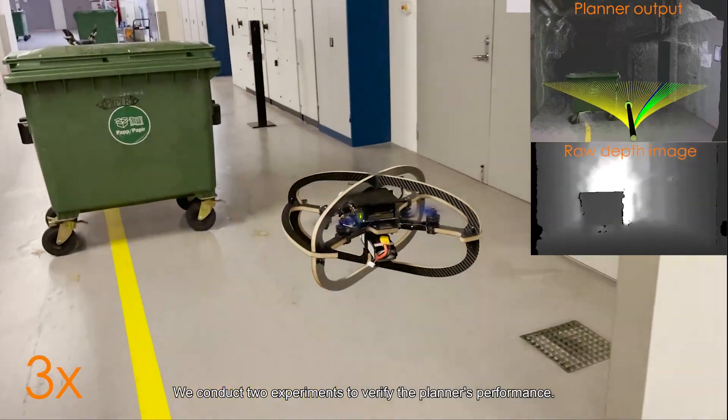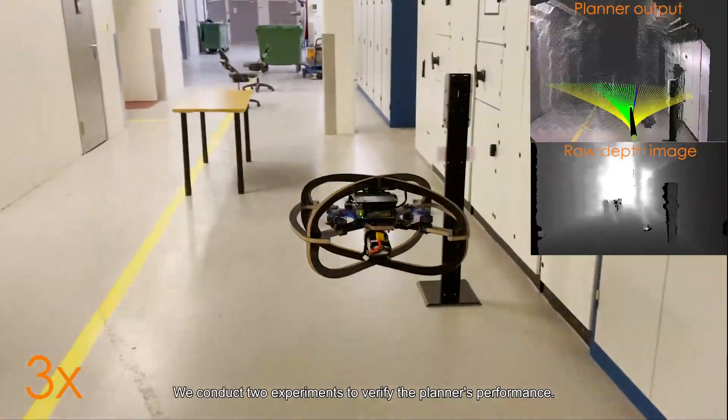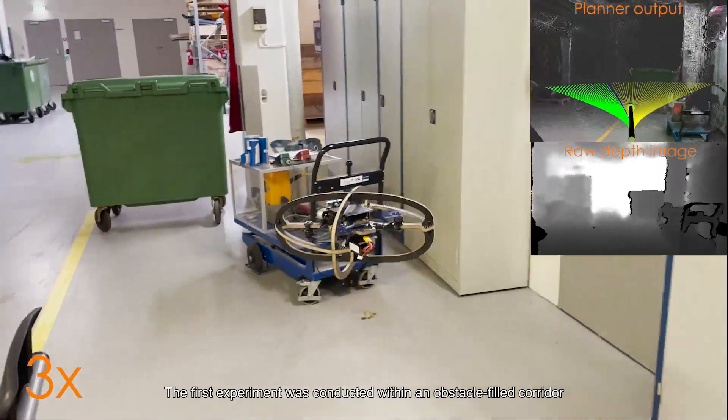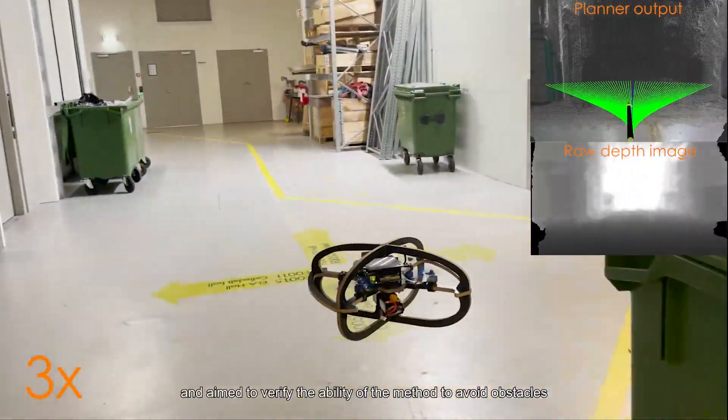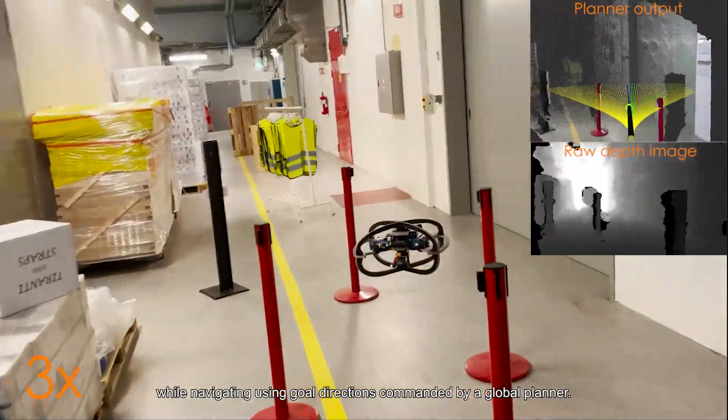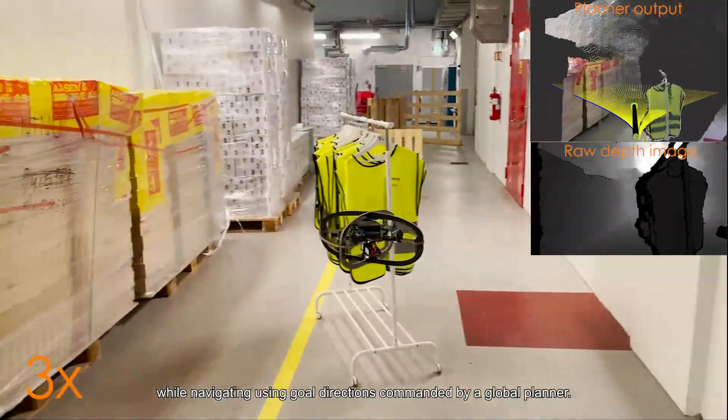We conduct two experiments to verify the planner's performance. The first experiment was conducted within an obstacle field corridor and aimed to verify the ability of the method to avoid obstacles while navigating using goal directions commanded by a global planner.